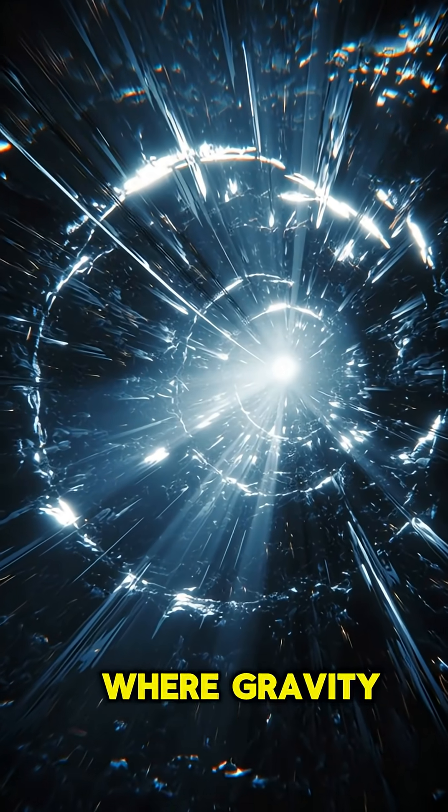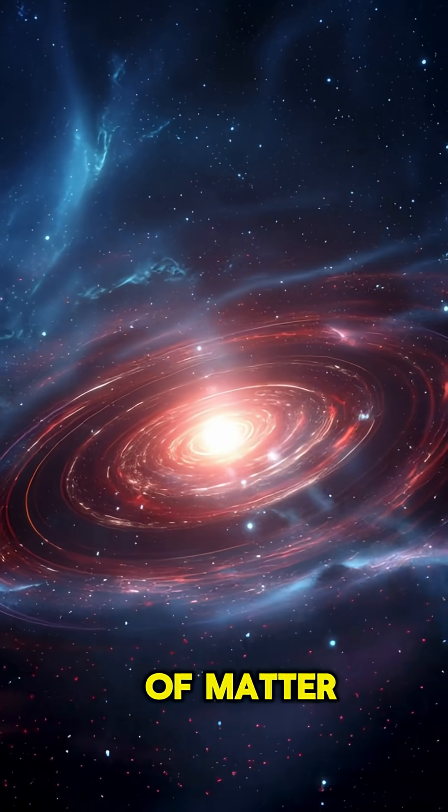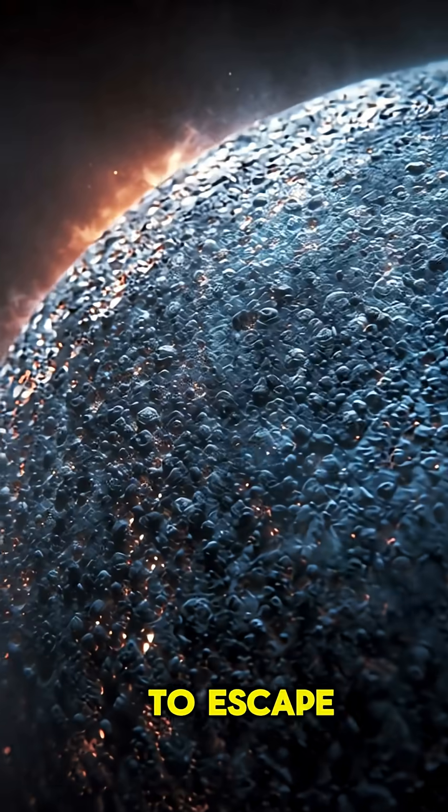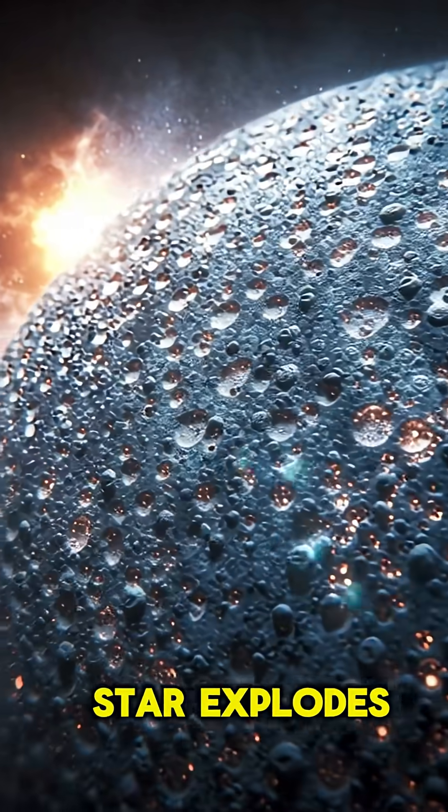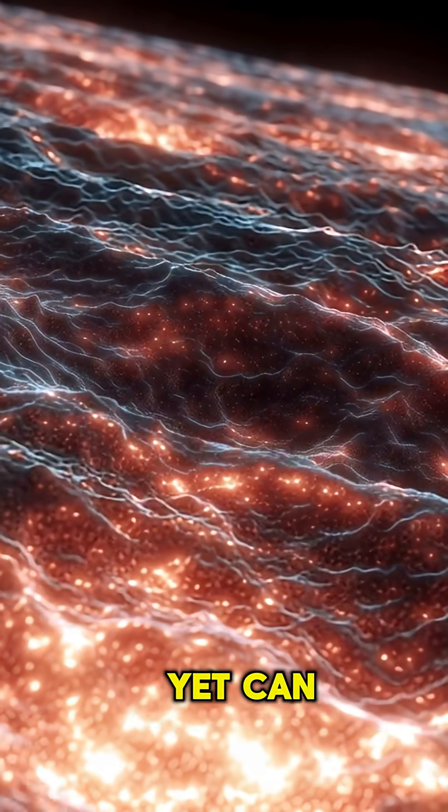Imagine standing on a star where gravity is a billion times stronger than Earth, where a single teaspoon of matter weighs as much as a mountain, and even light struggles to escape. This is a neutron star, the crushed core left behind after a massive star explodes. It's only about 20 kilometers wide, yet can hold twice the mass of the Sun.